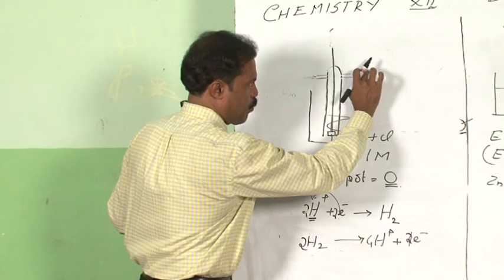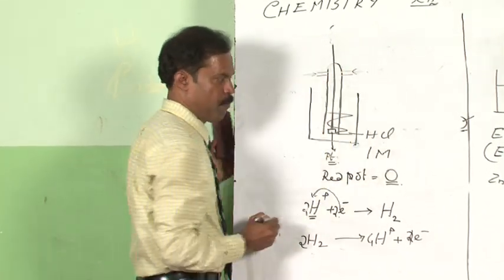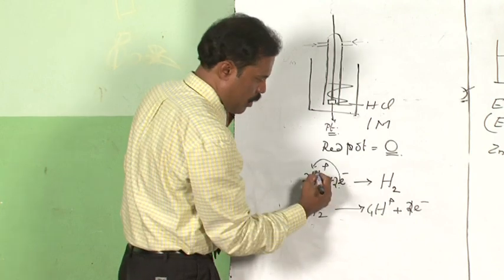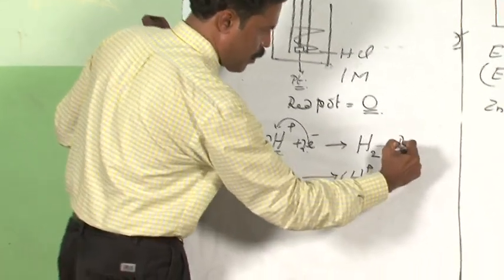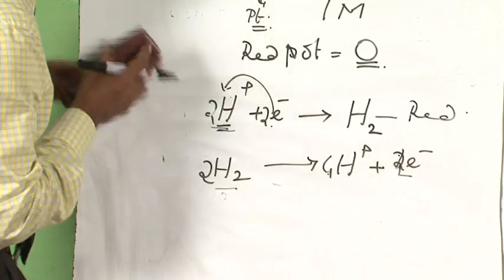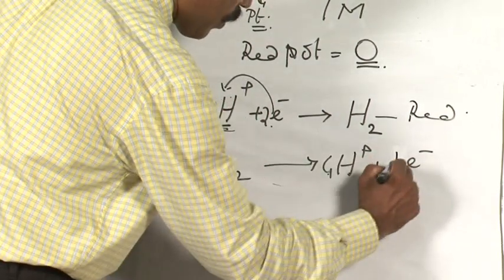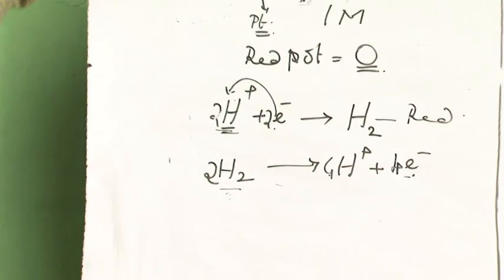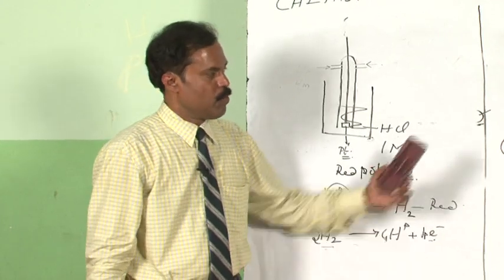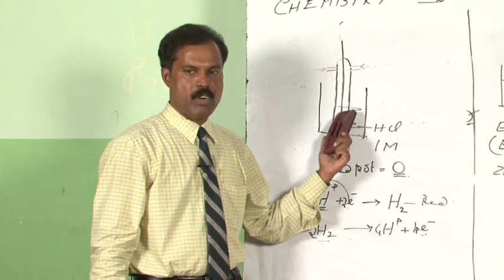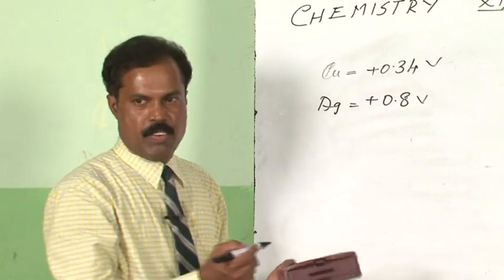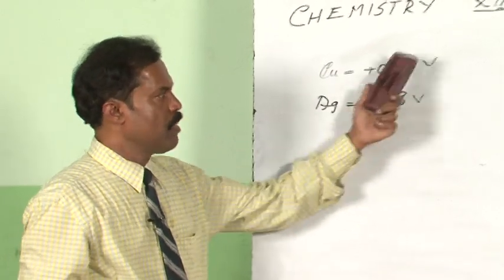Hydrogen is coming through the tube. H⁺ is accepting electrons — therefore this is the reduction part. And for the oxidation part: 2H₂ gives four H⁺ plus four electrons. So this electrode is able to act as an oxidation half as well as a reduction half. Whether a metal is getting oxidized or reduced, we use the hydrogen electrode as the standard electrode. This completes our discussion of the electrochemical series and how these values are generated.